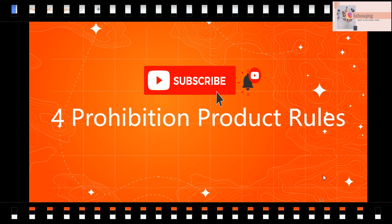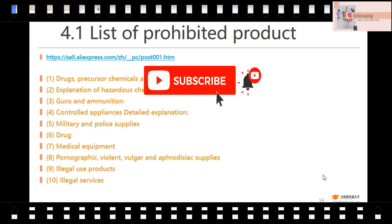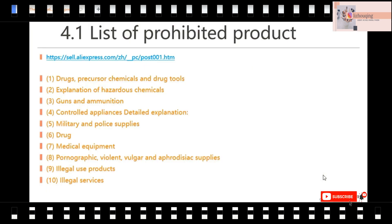Then we go to chapter 4 about the prohibition product rules. For the prohibited products, here is a list of the goods that cannot be posted onto AliExpress.